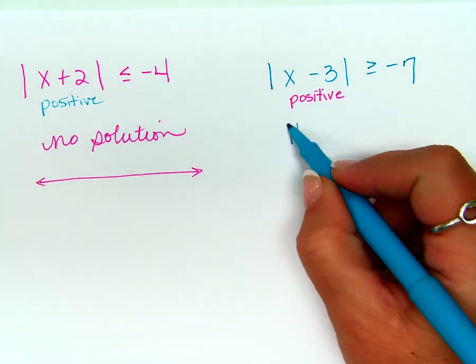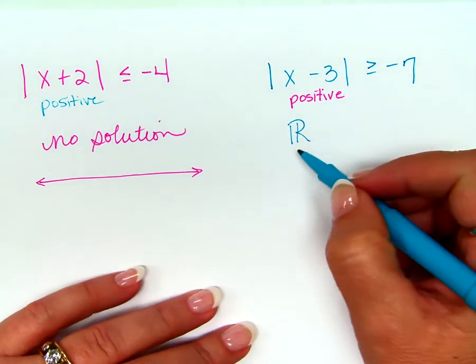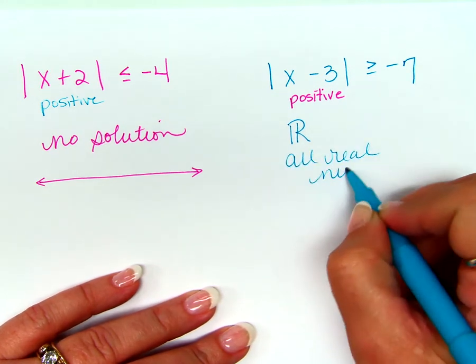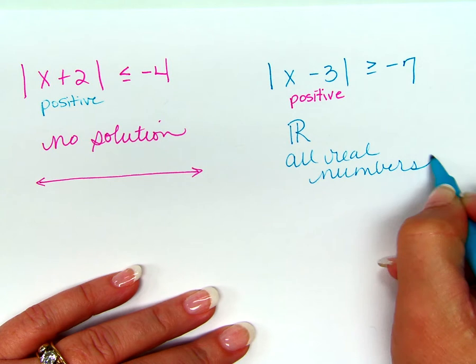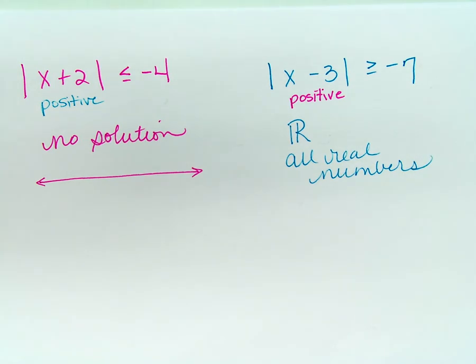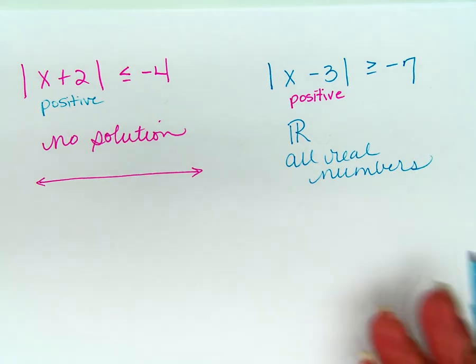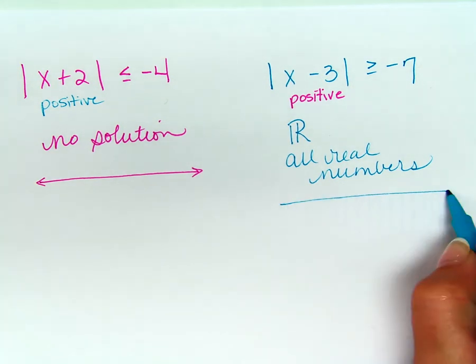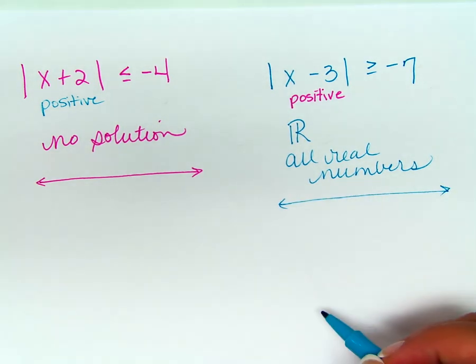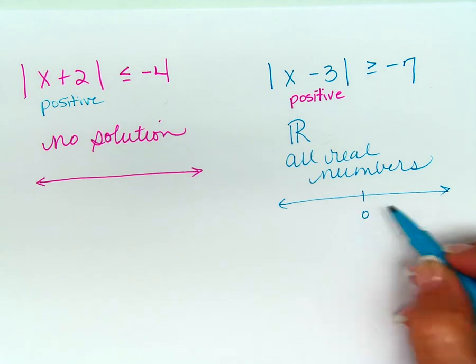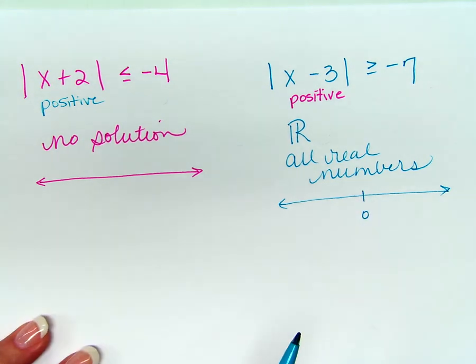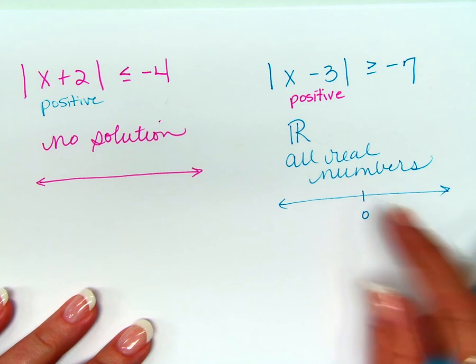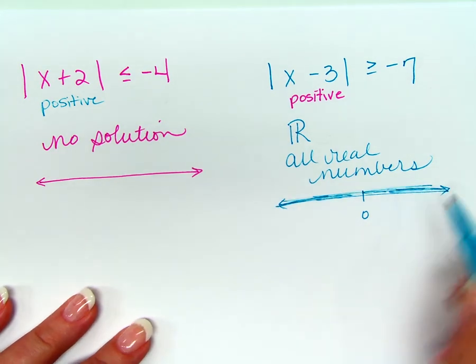All real numbers. We can do this. I don't know if you guys know about this one. We can go all real numbers. Yeah, we can write out the words. That's also okay. Okay. How do we graph this one? Let's put in a zero, just so we know. What are the answers again? All real numbers? So, all of them. Done.